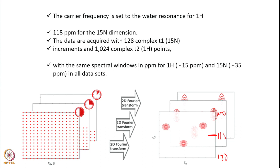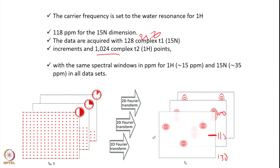Acquire with a minimum of 128 complex points in T1 (indirect) and about 1024 points for proton (T2 direct). We record 8 to 12 2D datasets; with different T1 delays the signal changes. We start with an inverted signal that progressively recovers, which is what we observe in 1D. In 2D the signal decays as we increase the T1 delay point.